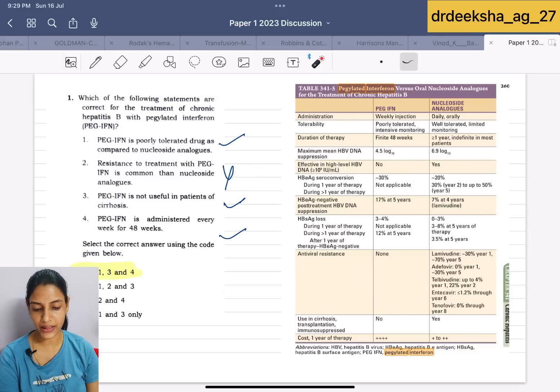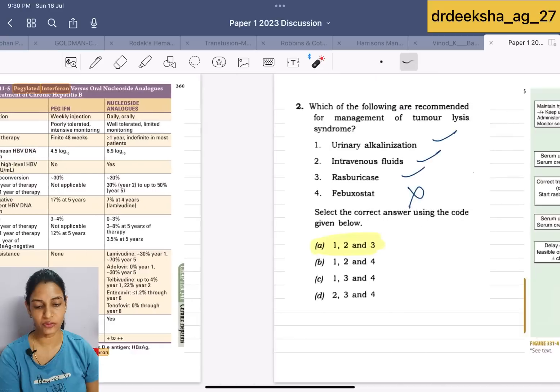Third is pegylated interferon is not useful in patients of cirrhosis. No, that is true. It is used in cirrhosis, transplantation, immunosuppressed, then no. And the last question, they were saying it is administered every week for 48 weeks, then that is true. Answer for this is 1, 3 and 4.